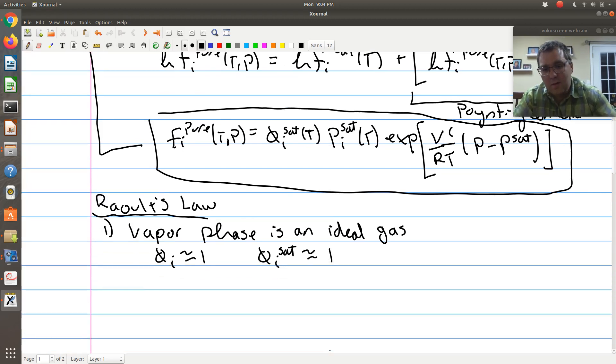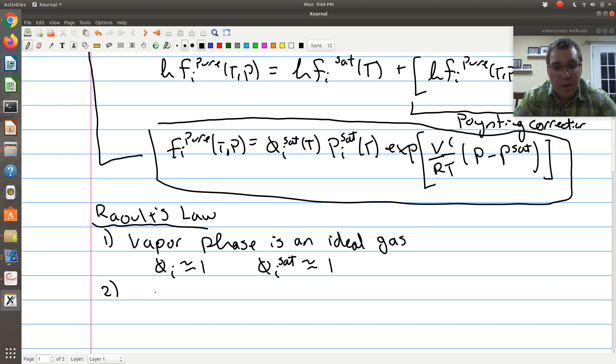Next assumption that Raoult's Law will make: if I look at the fugacity of component I in its pure component state, we already killed off my fugacity coefficient at saturation. The next assumption is that my Poynting correction is negligible. We had a slide that looked at some numerical values of Poynting correction. But in general, if I am at low pressures, well removed from my critical point, the assumption that my Poynting correction is negligible is probably pretty good.